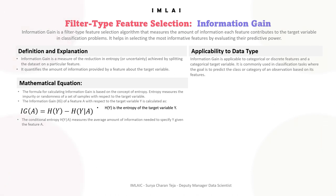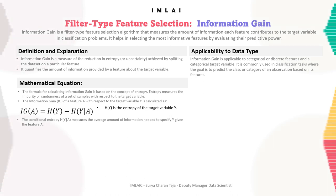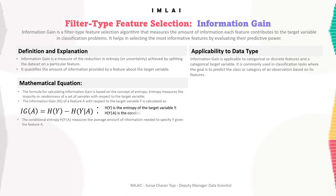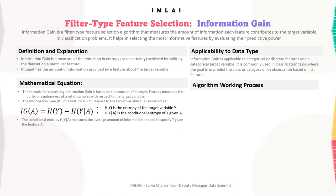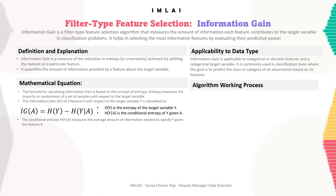H(Y|A) measures the average amount of information needed to specify Y given the feature A. Next, let's look into the step-by-step working process of the information gain algorithm.